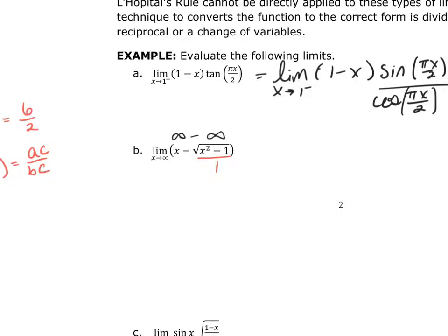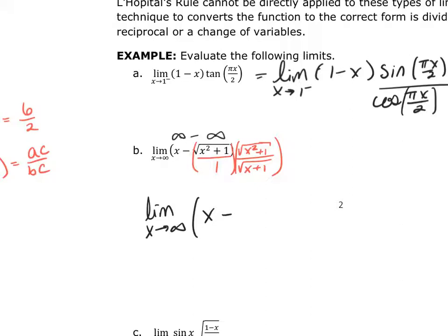I don't technically have a denominator other than 1, so I'll put 1 there as a placeholder. As long as I multiply the expression by itself — or by a number that is the same — I'm not changing its value. So I multiply by the square root of x²+1 in both numerator and denominator. Then I have the limit as x approaches infinity of x minus x²+1 over the square root of x²+1.